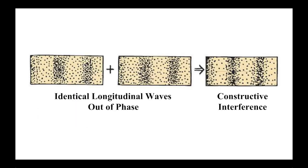Constructive interference in longitudinal waves occurs when compressions of two or more identical waves traveling in the same direction overlap, increasing amplitude and thus volume. In other words, the waves are in phase.